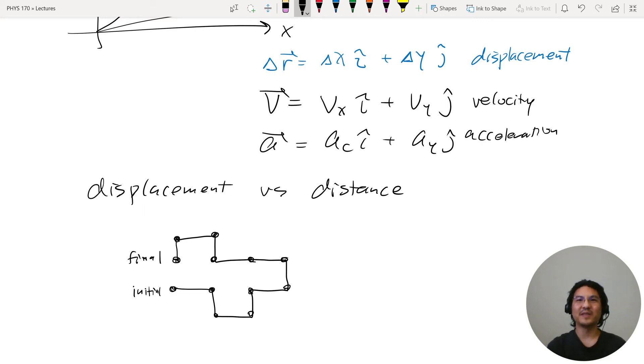Your distance is kind of the path length. So let's see, one, two, three, four, five, six, seven, eight, nine, 10, 11. So let's say each, just say one meter. So the distance is 11 meters. You went 11 meters. Distance.